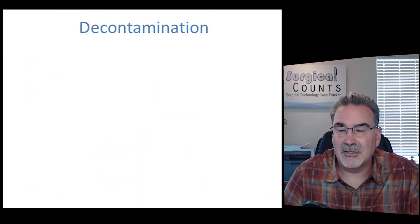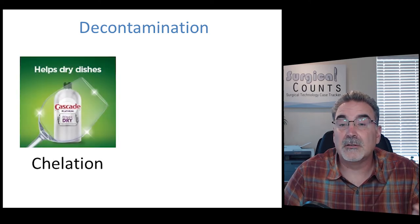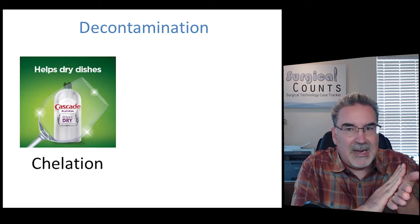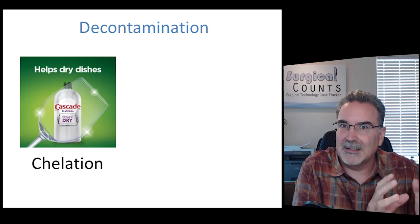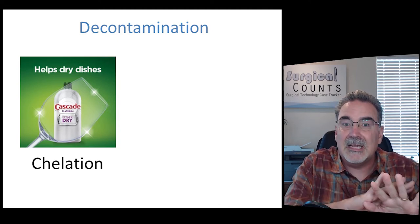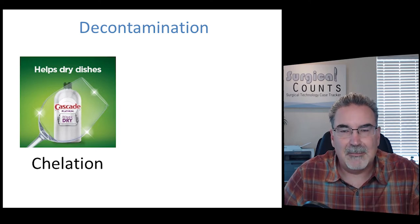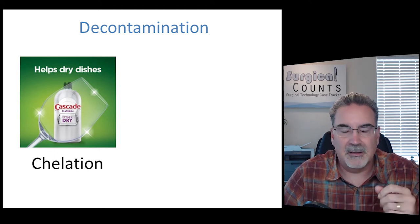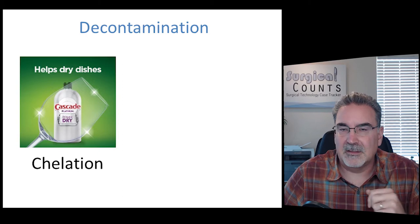Before our instruments can be sterilized, we usually send them to decontamination, which is going to help clean them off and remove a lot of debris before we sterilize them. One term associated with decontamination is chelation. Think of cascade dishwashing detergent — it creates a shine by preventing water from beading up on your glasses and forming little water spots. Chelation causes the water to spread out and prevents spotting. During decontamination, you don't want those little chemical deposits because they can hold bacteria. So you're going to use a chelation product to help prevent spotting on your instruments.